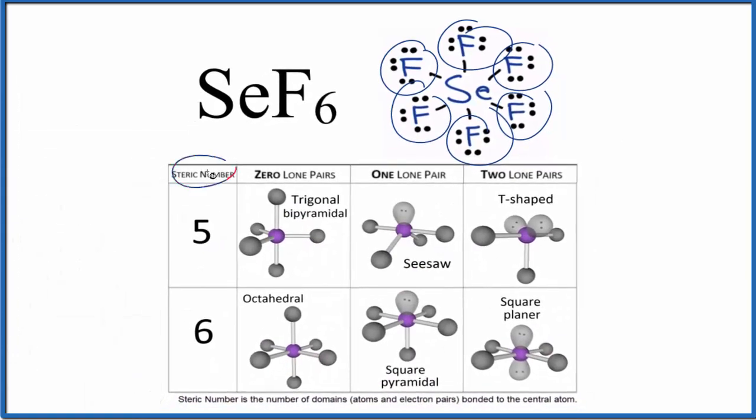So here we go. Steric number of six. And we don't have any lone pairs on the central atom. So because there are zero lone pairs, we have an octahedral molecular geometry for SeF6.